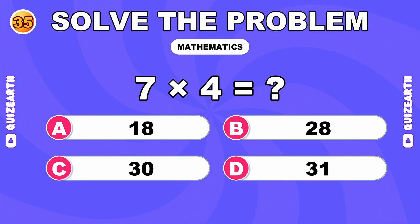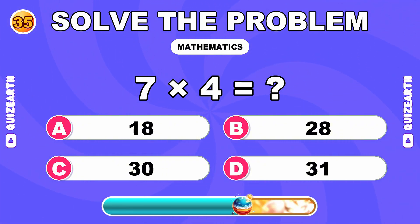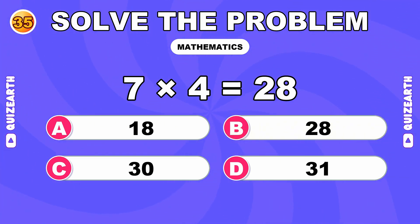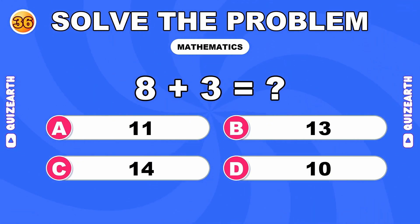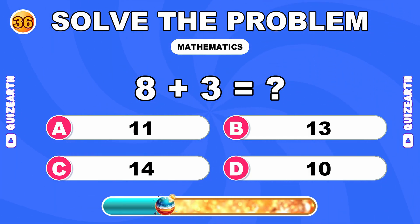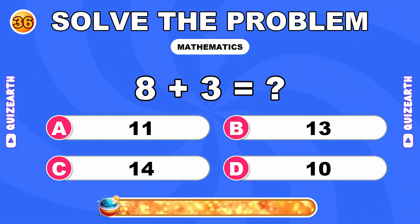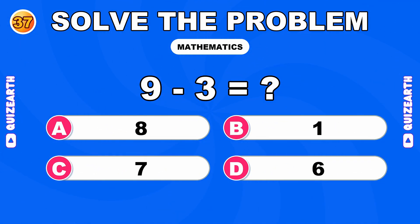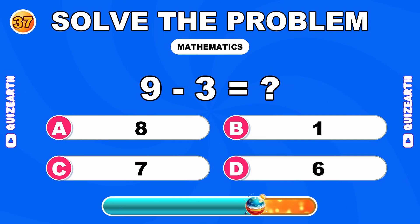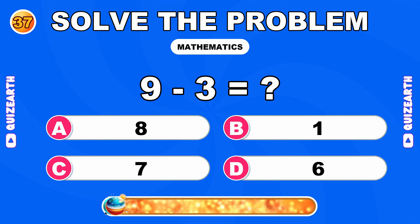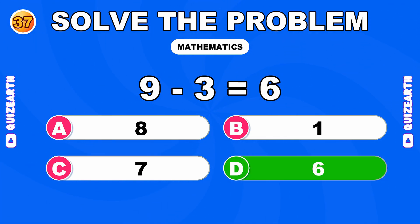How much is 7 times 4? Perfect focus. The answer is 28. What do you get when you add 8 and 3? You're on another level. The answer is 11. What is 9 minus 3? Magnificent. The answer is 6.